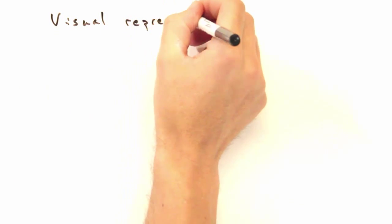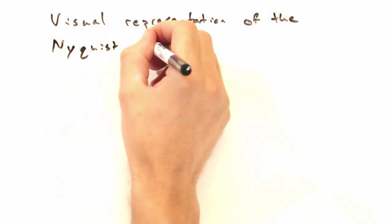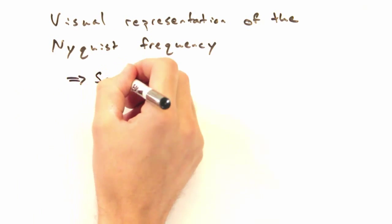So really, one should think about this as a visual representation of the Nyquist frequency. And what's that?